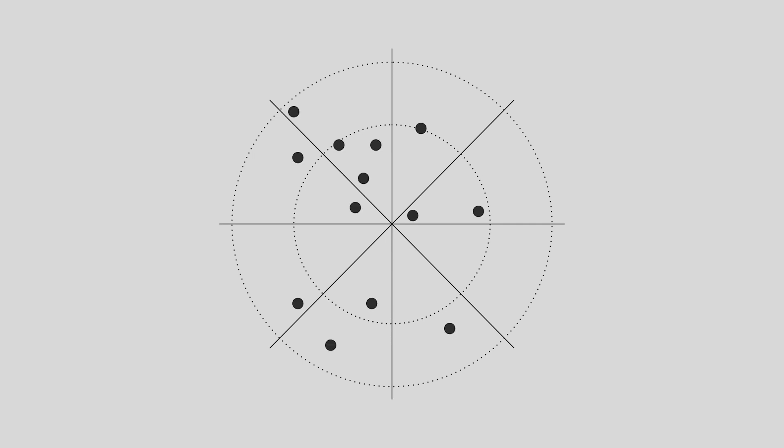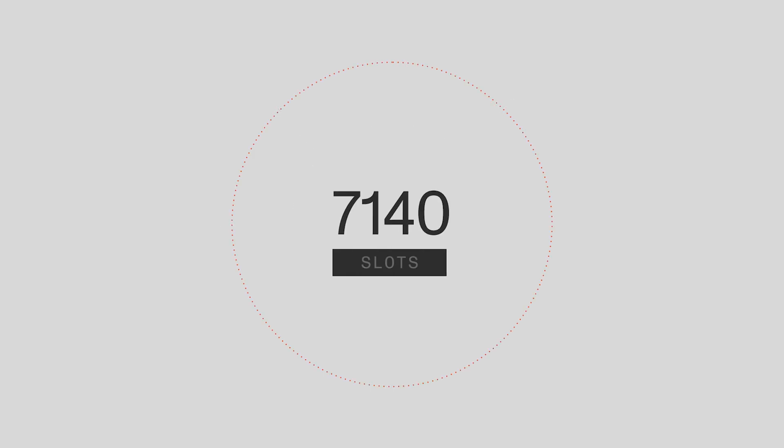Each epoch in MINA consists of a number of slots, and each slot is when a dart is thrown. As of mainnet launch, each slot lasts for three minutes, and an epoch in MINA currently includes 7,140 slots, which takes around 14 days.